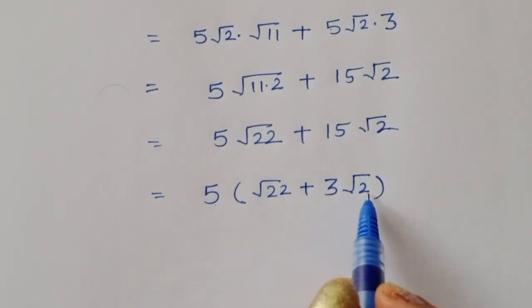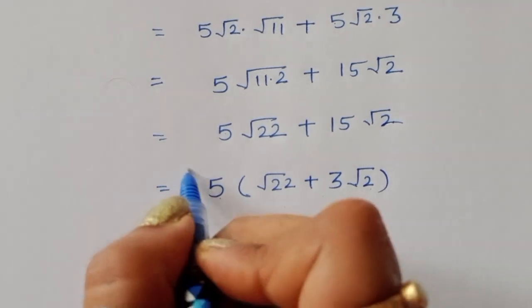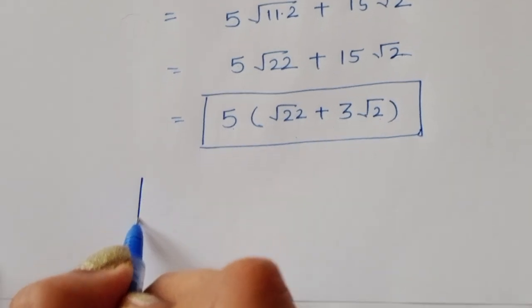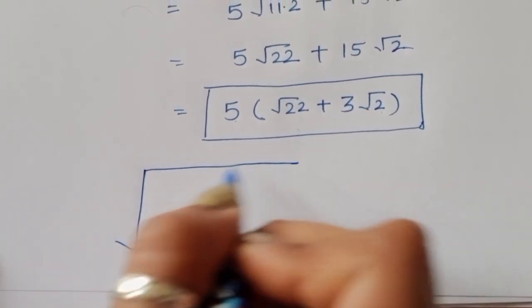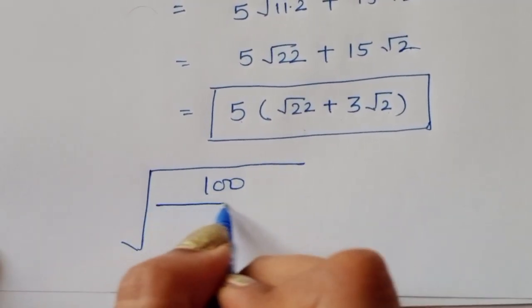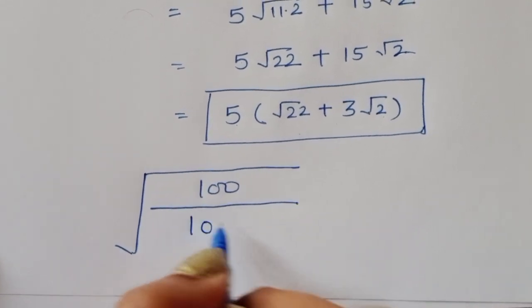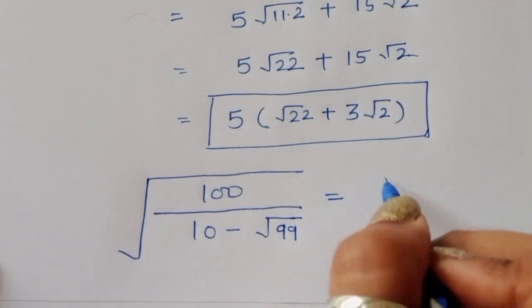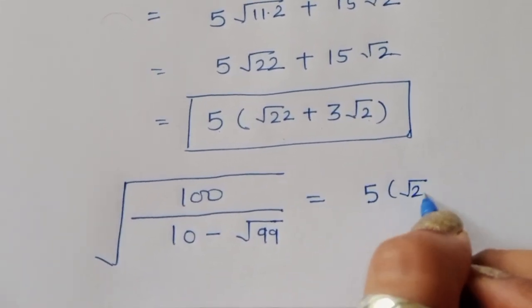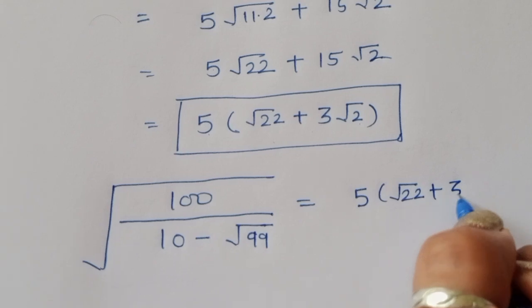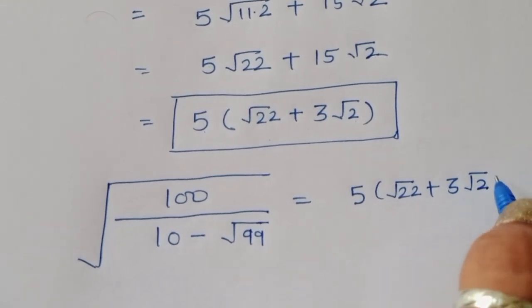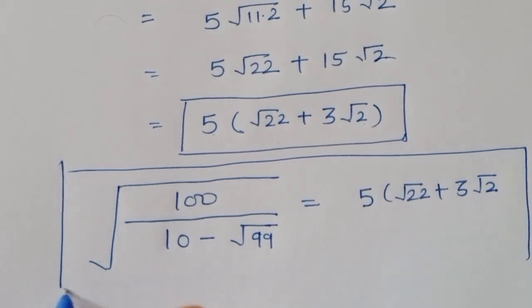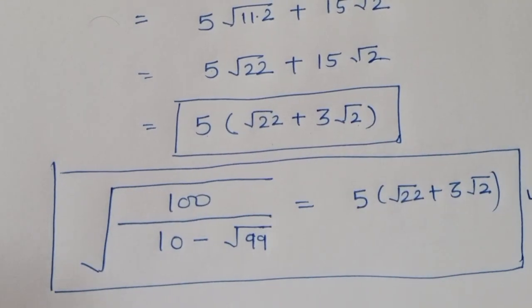So we got the solution: 5√22 plus 3√2. Therefore, √100 divided by (10 minus √99) equals 5√22 plus 3√2. This is the solution. Thank you.